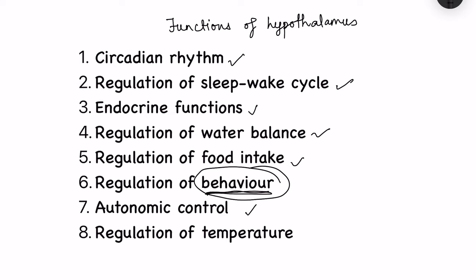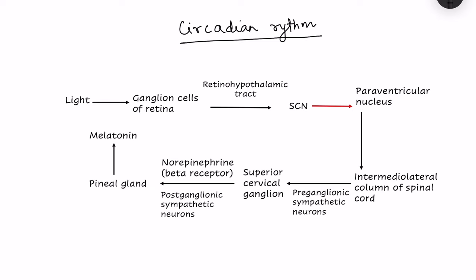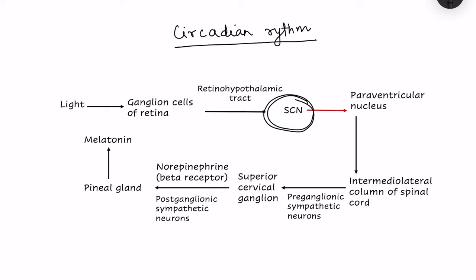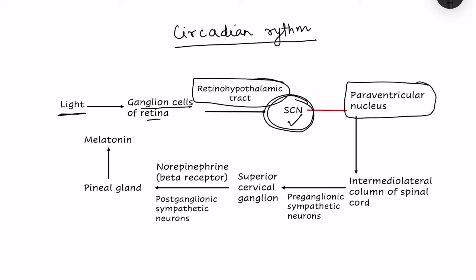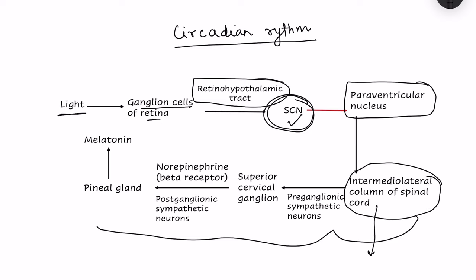For circadian rhythm, the key hypothalamic nucleus is the suprachiasmatic nucleus. During daytime, light stimulates ganglion cells of the retina, and from there the retino-hypothalamic tract stimulates the suprachiasmatic nucleus. This in turn inhibits the paraventricular nucleus of the hypothalamus, which is an anterior nucleus. Because the paraventricular nucleus is inhibited, the further pathway is also inhibited.